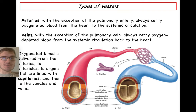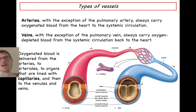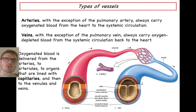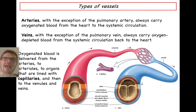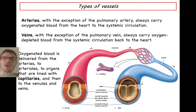Regardless of oxygen content, we'll generally assume arteries carry oxygen-rich blood and veins carry oxygen-poor blood. Arteries simplify down into arterioles, which then simplify into capillaries — the smallest type of blood vessel where nutrient and oxygen exchange occurs. Capillaries then feed into venules and back into veins. Think of arterioles, capillaries, and venules as everything in between arteries and veins.